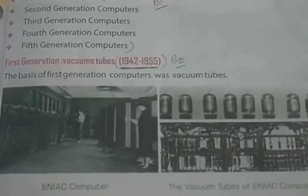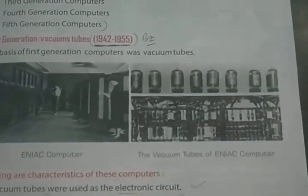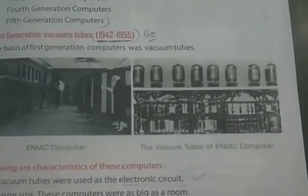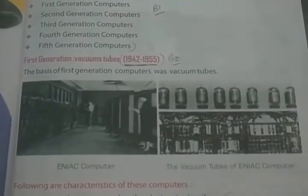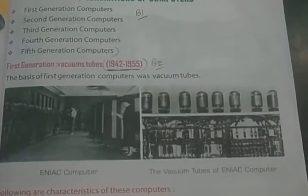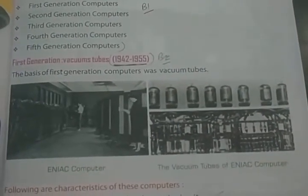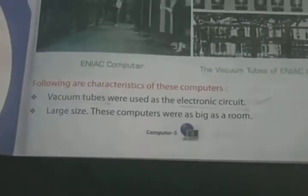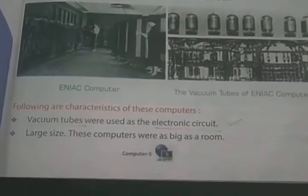1st generation computers also have a photo here — ENIAC's photo is given, along with vacuum tubes. The basis of 1st generation computers, which existed from 1942 to 1955, was vacuum tubes. Vacuum tubes were used in electronic circuits as the main electronic component.